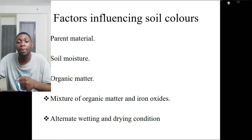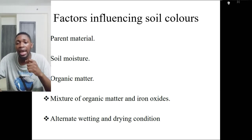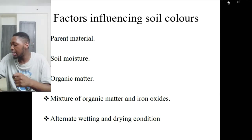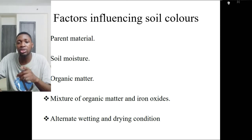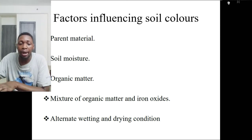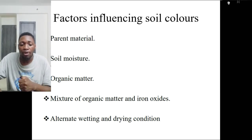The factors influencing soil color include: parent material — as discussed earlier, whereby soil color is inherited from the parent material, termed lithochromic, with red soils originating from red sandstone as an example. Another factor is soil moisture. We also have organic matter, mixture of organic matter and iron oxides, and alternate wetting and drying conditions.